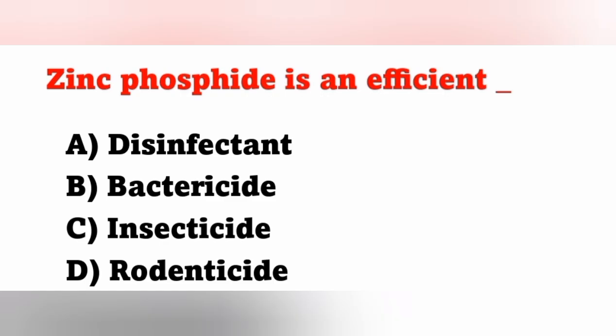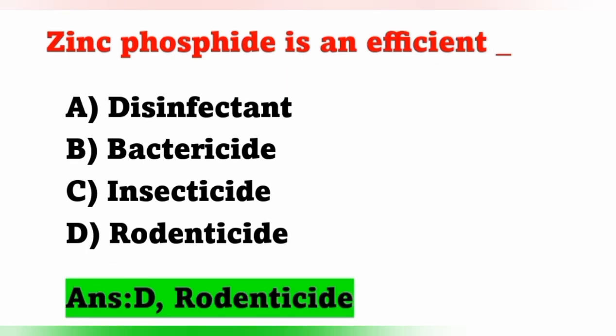Next question: Zinc phosphide is an example of which option? A) Disinfectant, B) Bactericide, C) Insecticide, D) Rodenticide. Zinc phosphide is an example of a rodenticide. Option D is the correct answer. Rodenticides are chemical agents used to kill rodents such as rats, mice, and chip bugs.